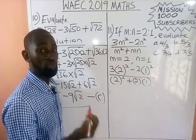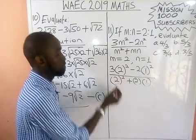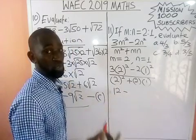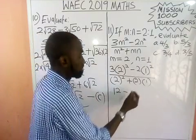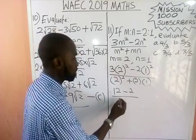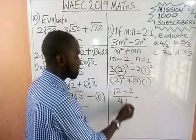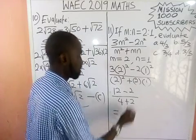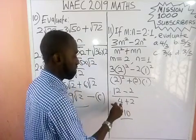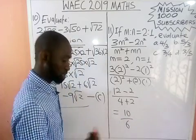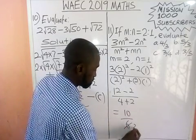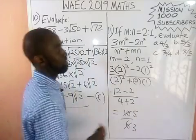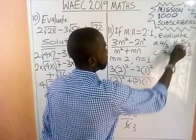Two raised to the power 2 is 2 times 2, which is 4. So 4 times 3 gives us 12. Then 1 raised to power 2 is 1, and 1 times 2 gives us 2. So the numerator is 12 minus 2, which equals 10. The denominator is 4 plus 2, which equals 6. Ten over six simplifies: 2 goes into both, giving us 5 over 3. The correct answer is option B.